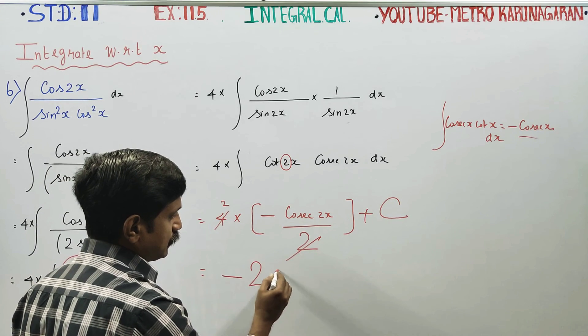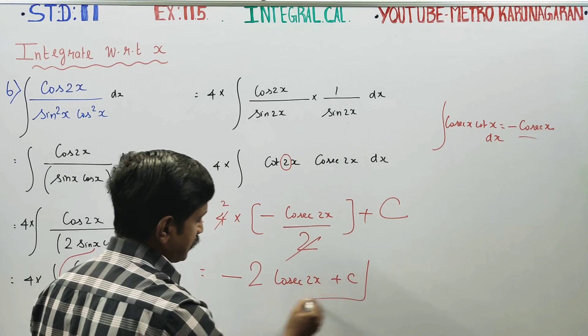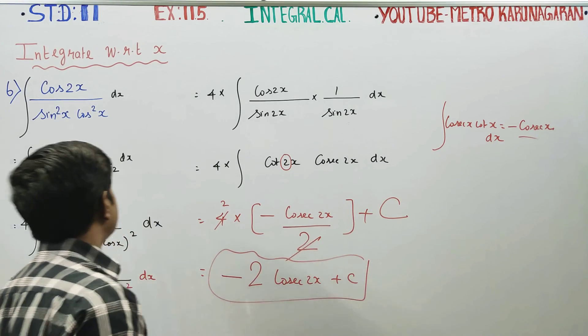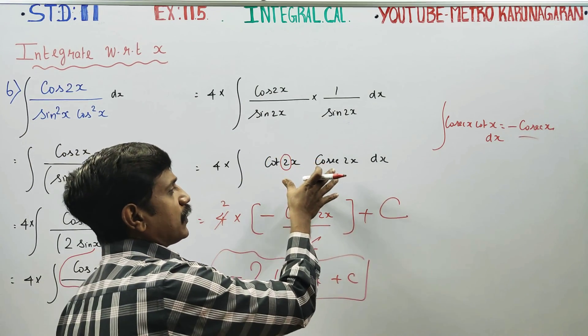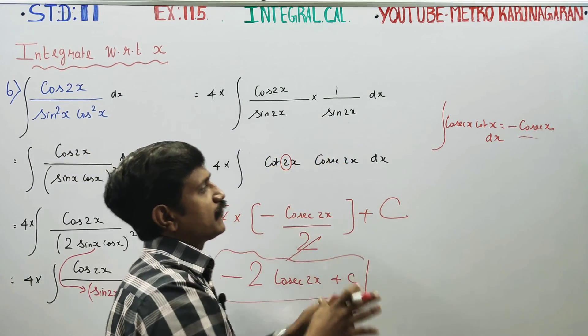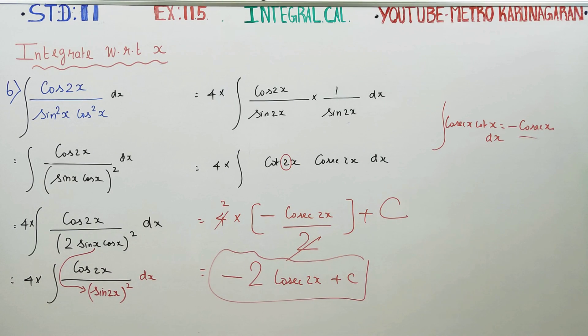Therefore, the answer will be minus 2 cosecant 2x plus c. You have to decompose the sum to a convenient form, and the form will go into the integration ready-made formula. Thank you.